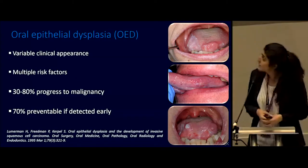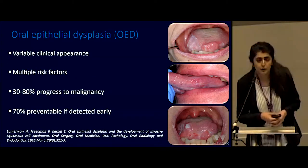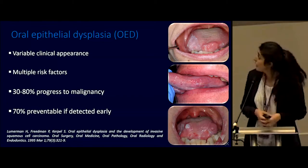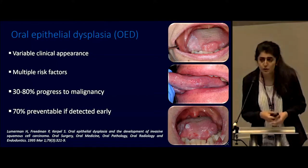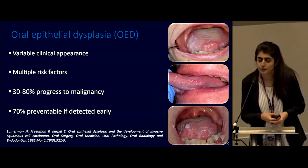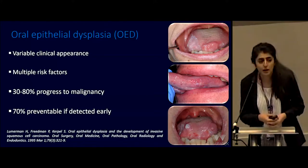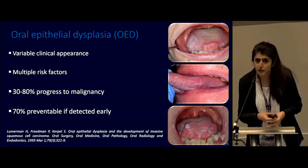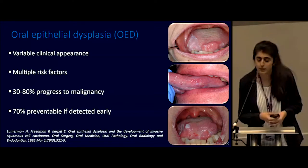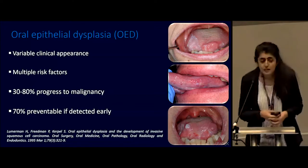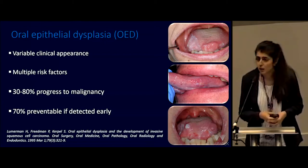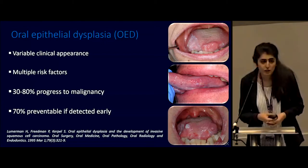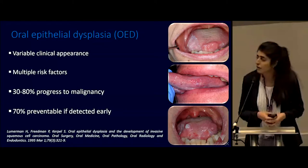Oral dysplasia, as you can see from the clinical photos, has a variable clinical presentation. It can present as a chronic white patch or a red patch, or it can appear as a mixed white-red lesion. It can also have a papillary, verrucous, or ulcerative appearance. There are a number of different risk factors, including genetics, smoking, excessive alcohol intake, and tobacco use in betel nut and palm chewing.